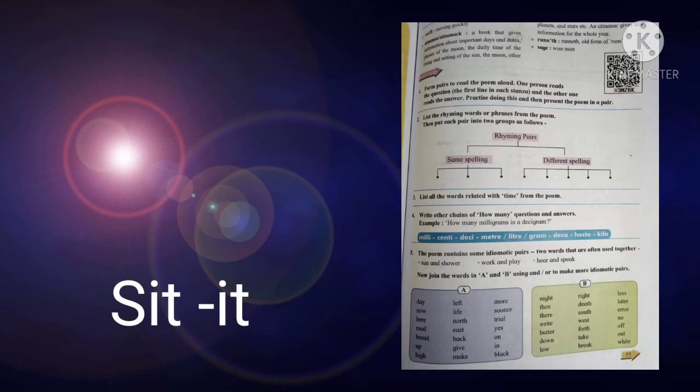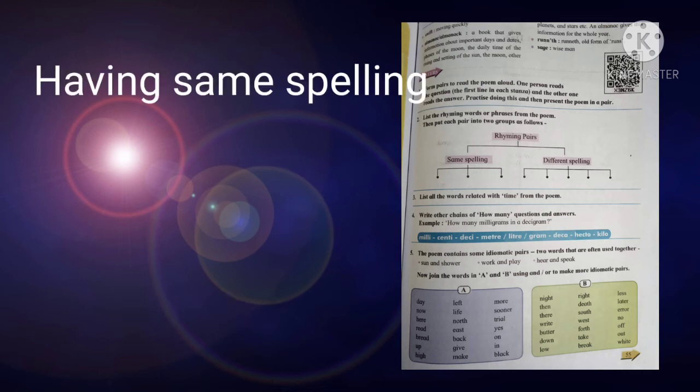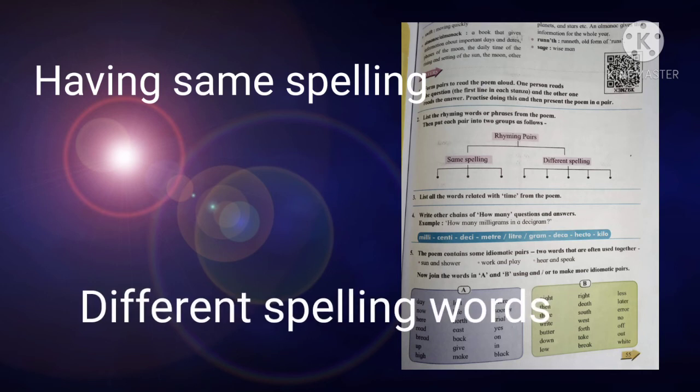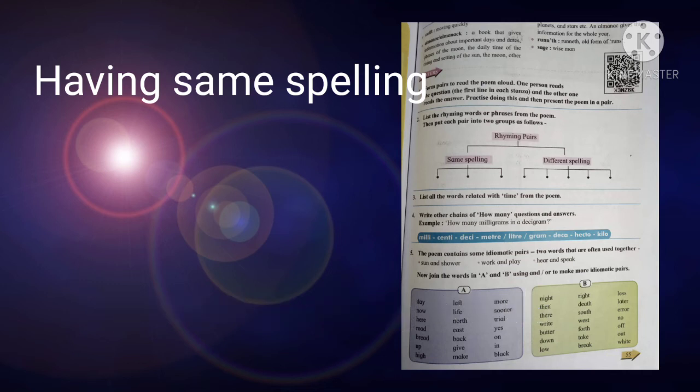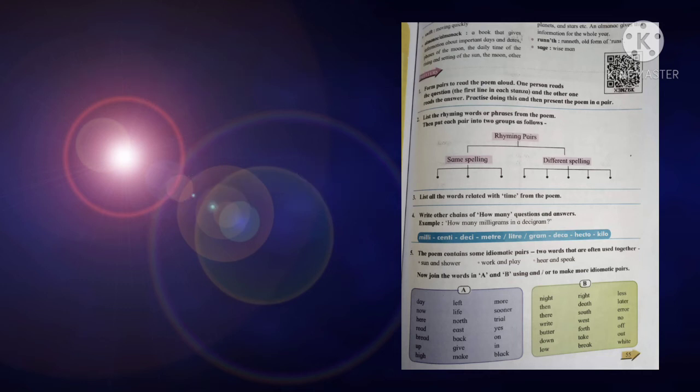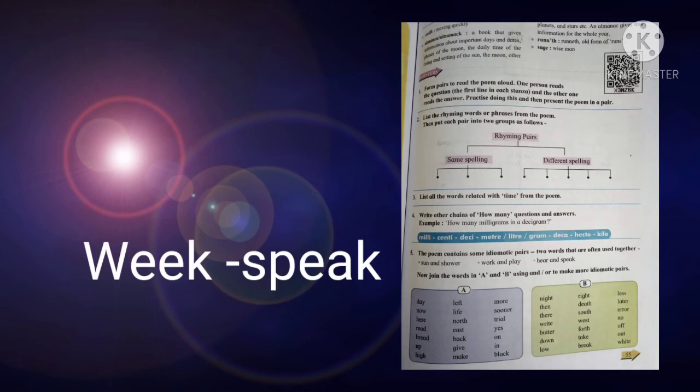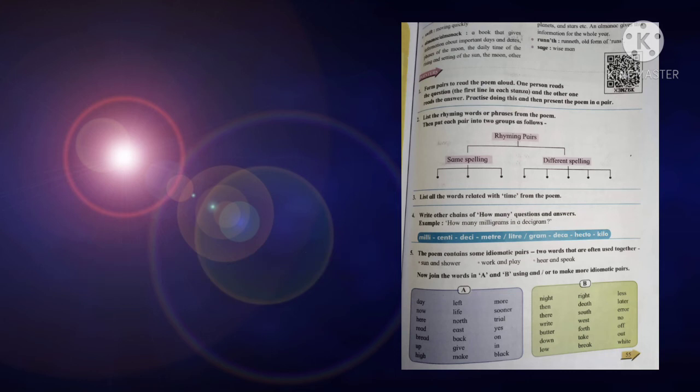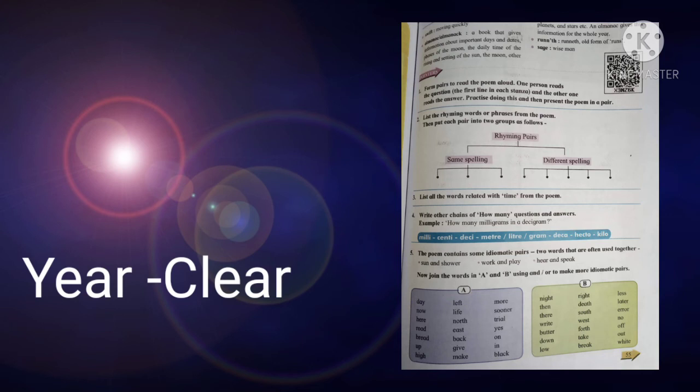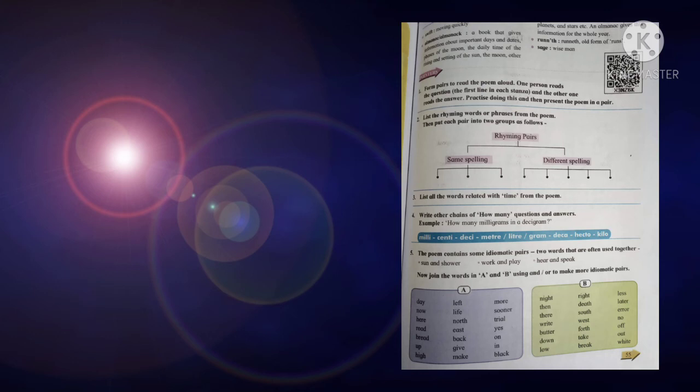So you have to classify these rhyming words in two parts: same spelling and different spelling. Same spelling means, for example, say-day, most of all two letters are same. Week-speak means W-E-E-K and S-P-E-A-K, so different spelling. Year-clear, Y-E-A-R and C-L-E-A-R, more means three letters are same. So you have to classify in same spelling, such type of rhyming words you have to write in your notebook.